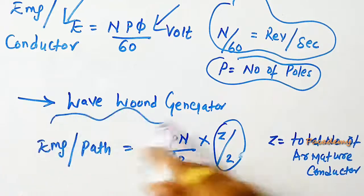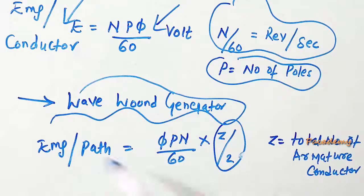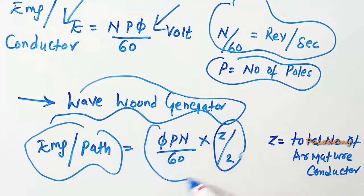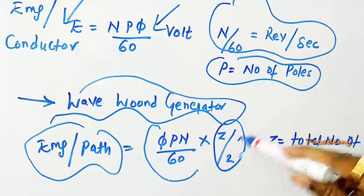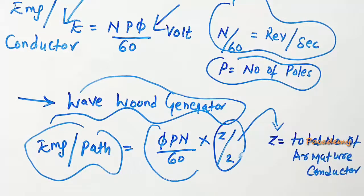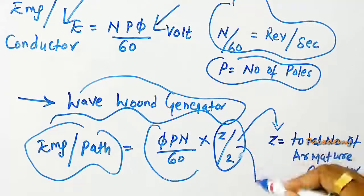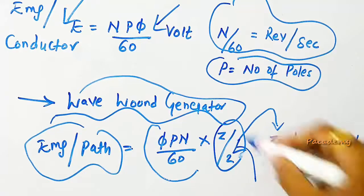When the winding is wave wound, the equation changes to EMF per path equals 𝜙PN divided by 60 times Z by 2, where Z is the total number of armature conductors, and Z by 2 is the total number of armature conductors per path.